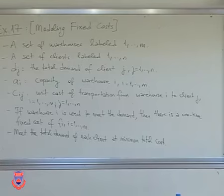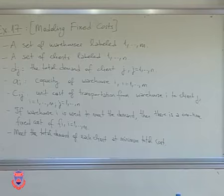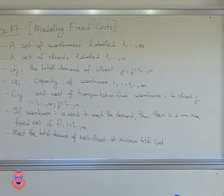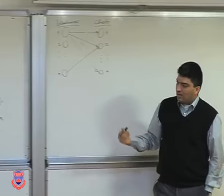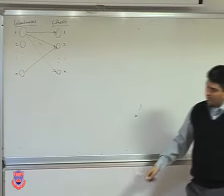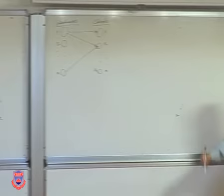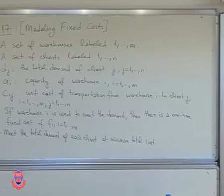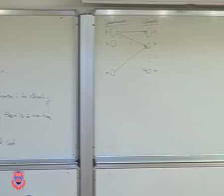I pay this fixed cost only if I use that warehouse. If I don't use it at all, I don't pay anything. Think of it as a one-time cost — for example, if I use warehouse 1, I need to send a truck, and the cost of the truck is included in this fixed cost. Importantly, this cost is independent of the amount shipped from warehouse i. Even if you send one unit, you still pay that same amount. It's a function of whether you use that warehouse or not.